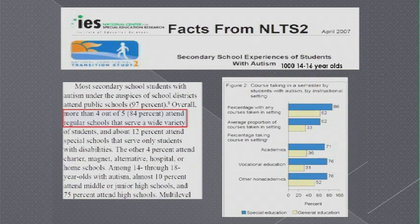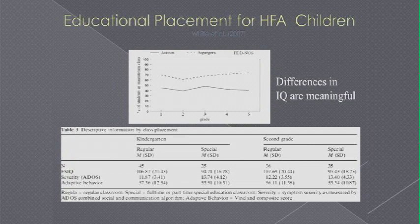84% of children with autism attend regular schools by the time they go into secondary school, and 33% take much of their classwork in regular classes. We can see that IQ, like theory of mind, tends to make a difference — an average of 106 versus 94 in IQ correlates with spending 70% versus 50% of the time in the regular classroom. In the last 10 years we've begun to understand that many students with autism in school do not achieve commensurate with IQ — they show lower achievement than expected, to the extent that people have begun to talk about learning disabilities in children with autism.